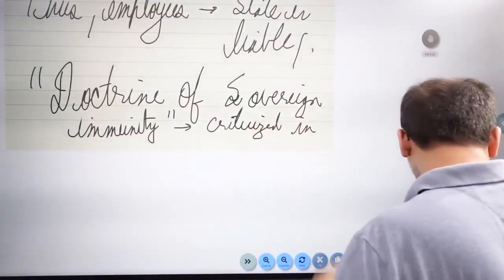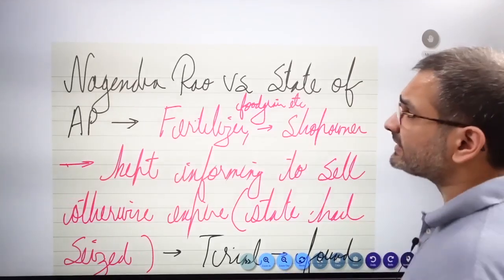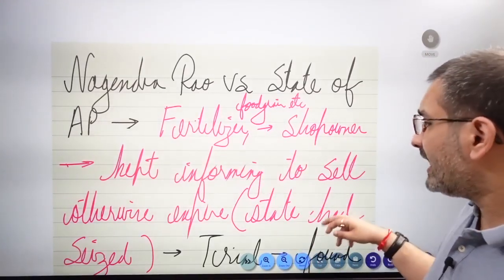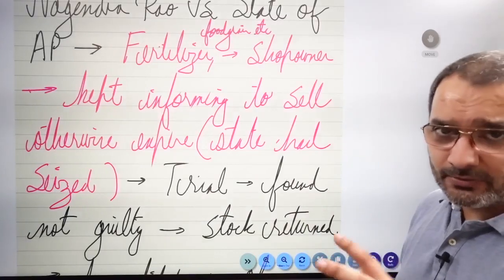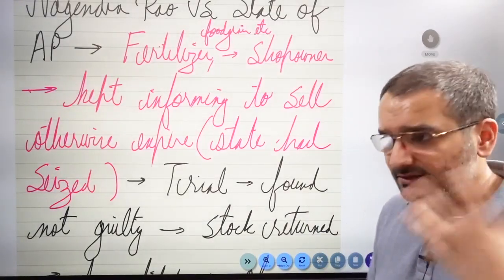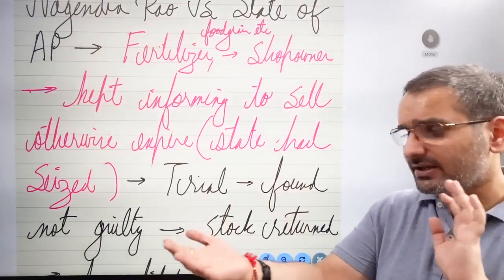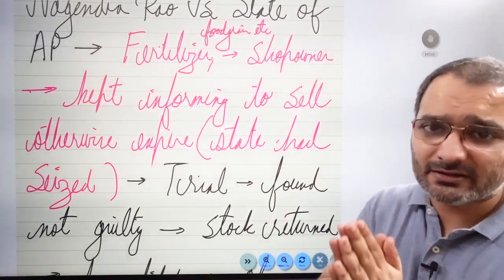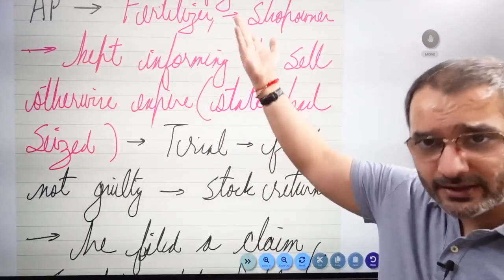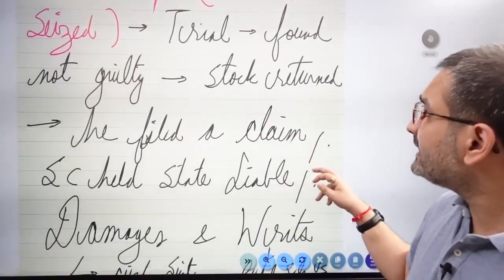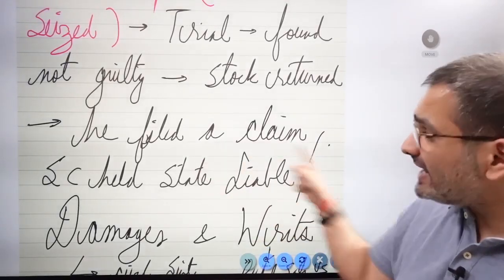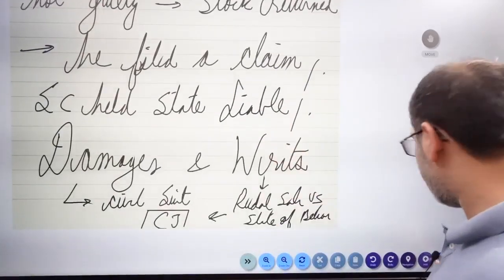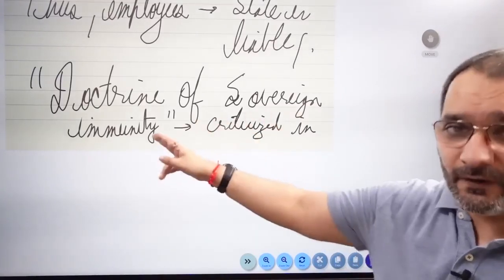Doctrine of sovereign immunity was criticized in Nagendra Rao vs State of Andhra Pradesh. This is a very recent case law. There was a shop owner stocking fertilizers, food grains, etc. The police charged him with some offense and seized the goods. He kept informing authorities to please sell the fertilizer otherwise it will expire. The trial happened, he was acquitted, completely free. He was found not guilty and the stock was returned but it was expired. He filed a claim against the government. The Supreme Court held the state to be liable and criticized the doctrine of sovereign immunity.